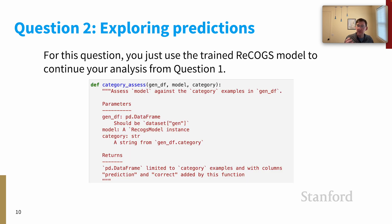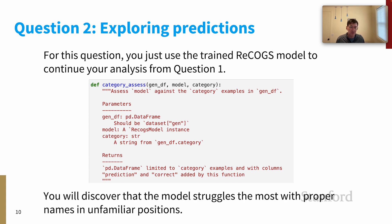So you complete a function called category_assess. And the name of the game here is to discover for yourselves that this really good model struggles really a lot with the proper names that are in unfamiliar positions, exactly the names that you identified for question one. And so you can see the hypothesis behind COGS and ReCOGS validated here. Novel combinations of these elements, however simple, turn out to be challenging for our really good model.